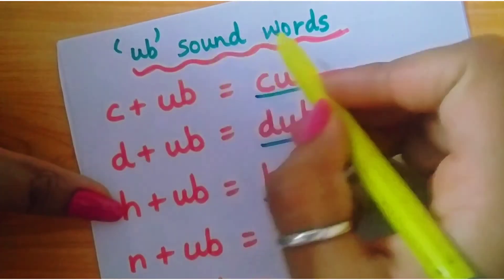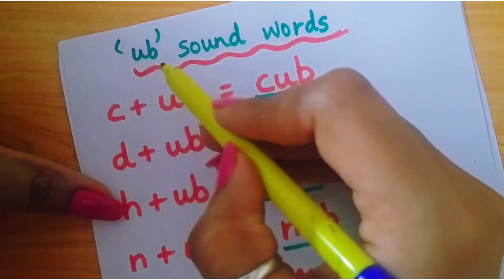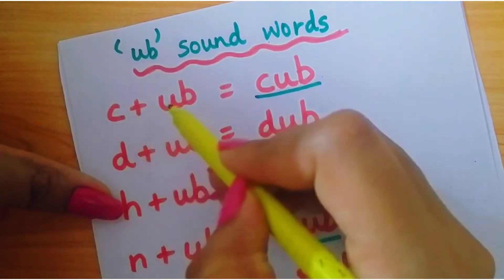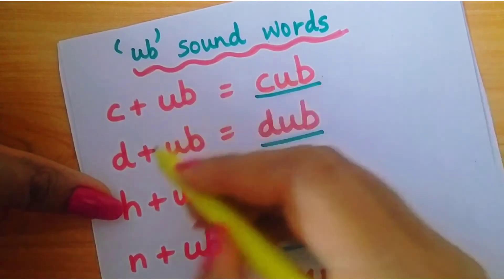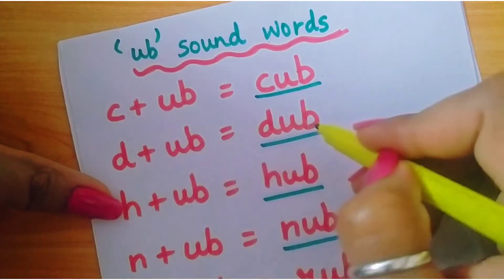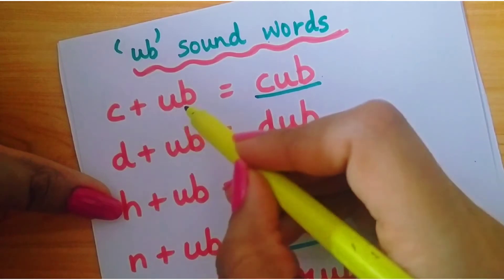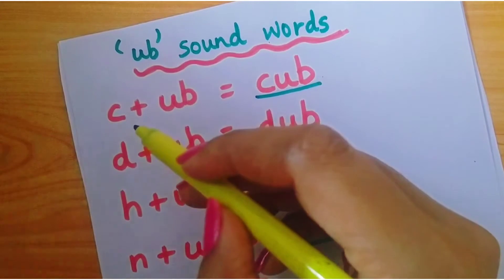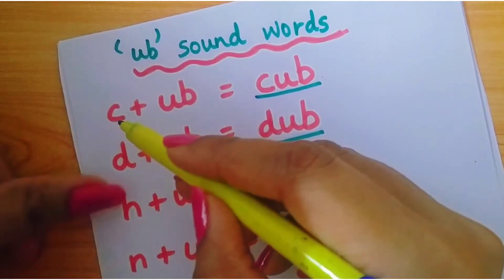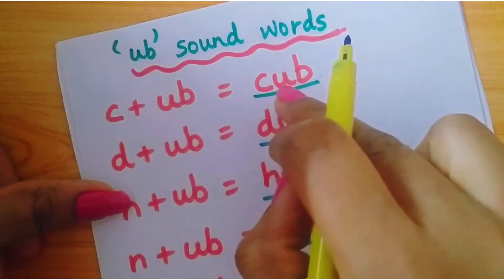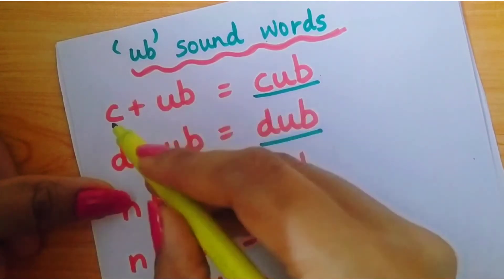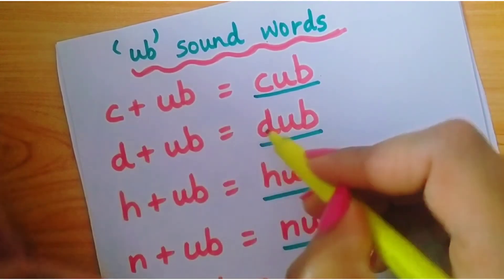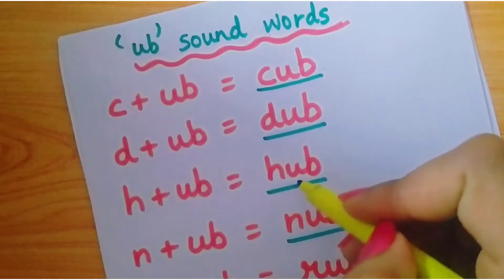ठीक है तो ये कौन से sound words है up family words. a-b-ub, c-ub-cup, d-ub-dub. जब बच्चा ये वाली spelling अच्छे से learn कर लेगा कि ये ub लिखा है तो उसे बहुत ही simple रहेगा बस उसे साथ में एक word ही तो add करना है तो वो साथ में बहुत अच्छे से add करके आपको बता पाएगा. c-ub-cup, d-ub-dub, h-ub-hup.